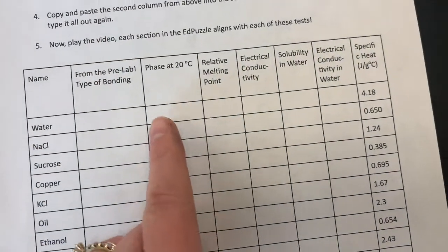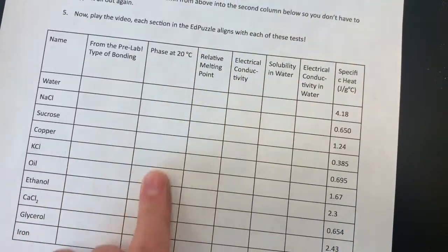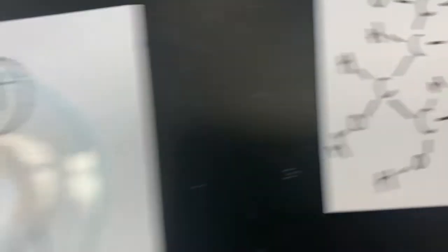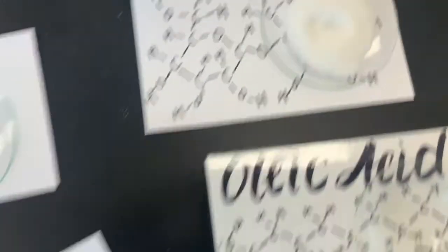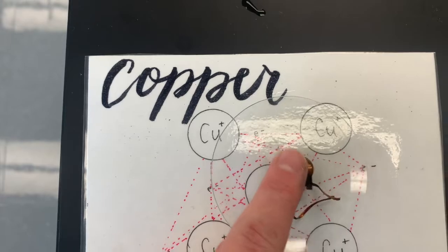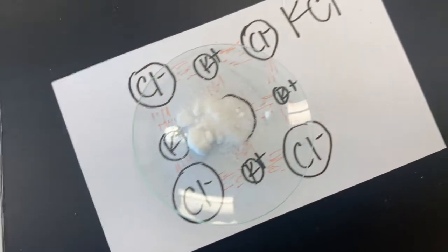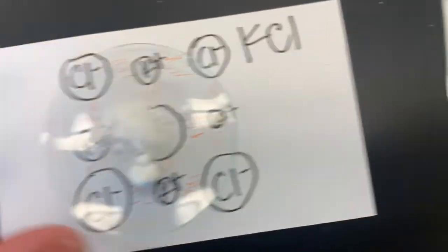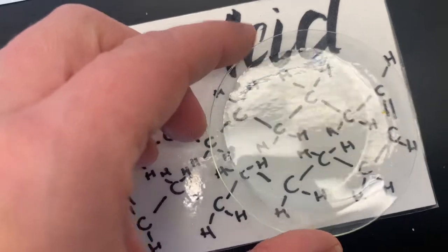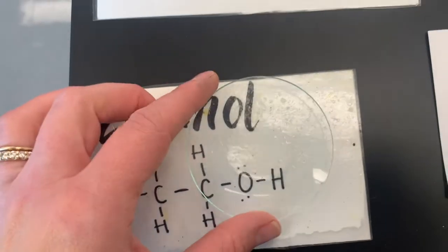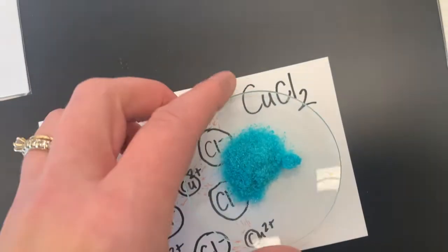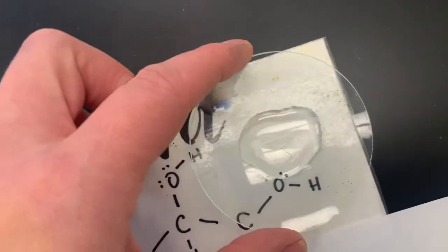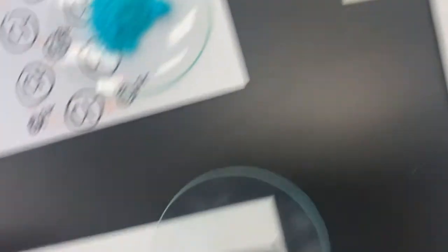Our first section here is phase at 20 degrees. So let's just check on the phase. I will do all of these in order every single time. And that's about the temperature of the lab in Celsius here. So water, I think we know what that is. What's the phase of sodium chloride? What's our phase of sucrose? Phase of copper. So we're talking solid, liquid, or gas. Phase of potassium chloride. Phase of oleic acid, phase of ethanol, phase of copper two chloride, phase of our glycerol. And then phase of iron.